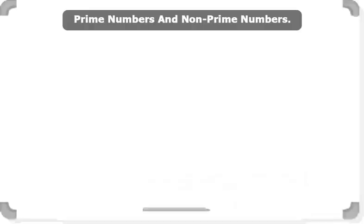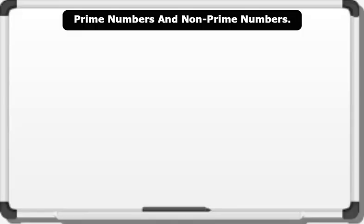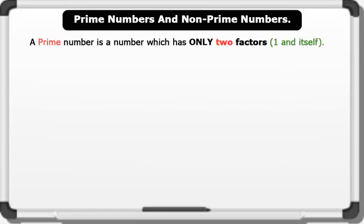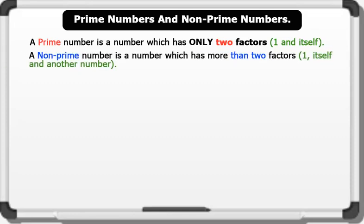Prime numbers and non-prime numbers. A prime number is a number which has only two factors: one, itself, and another number.